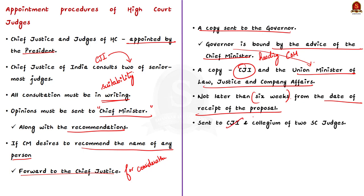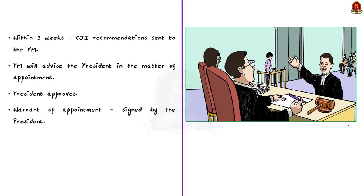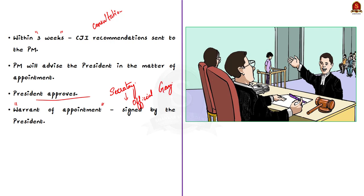The recommendation is then sent to the Chief Justice of India and the Collegium of two judges of the Supreme Court, who take into account the views of the Chief Justice of the High Court and those judges consulted by him, as well as Supreme Court judges conversant with the affairs of that High Court. Within three weeks, the recommendation of the Chief Justice of India is sent to the Prime Minister, who advises the President in the matter of appointment. Once approved, the Secretary to the Government of India in the Department of Justice informs the Chief Justice of the High Court, and when the warrant of appointment is signed by the President, the appointment is announced and notified in the Gazette of India.